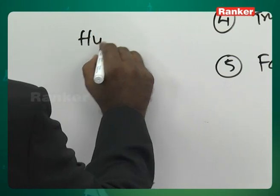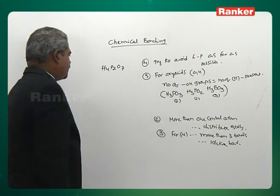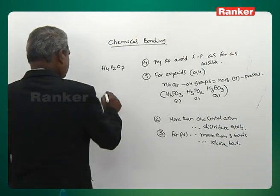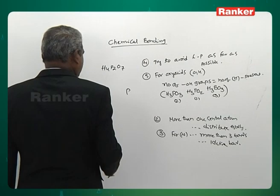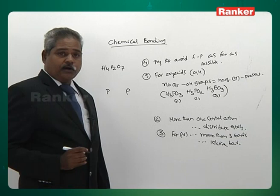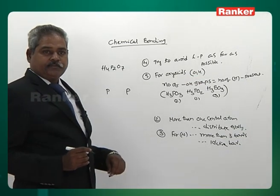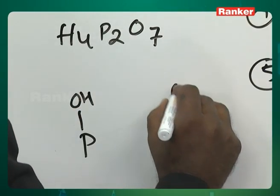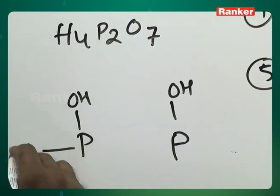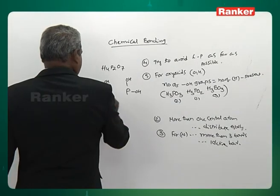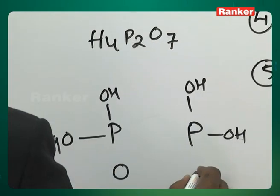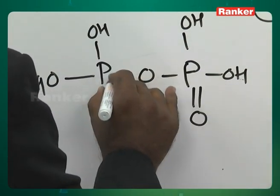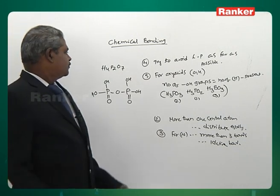H4P2O7: two phosphorus atoms as central atoms. Four hydrogens means four OH groups — distribute equally: two OH per phosphorus. Seven total oxygens with four used in OH groups leaves three more oxygens distributed equally. Oxygens form two bonds each. That covers the structure of H4P2O7.